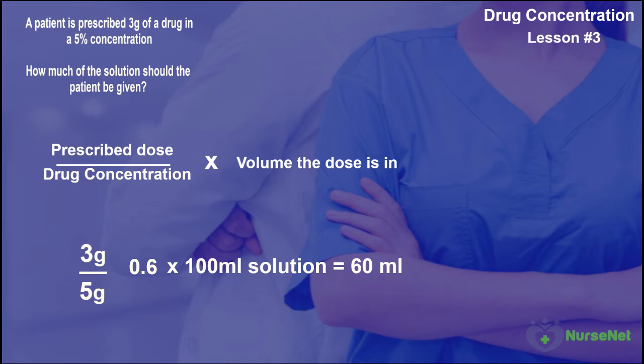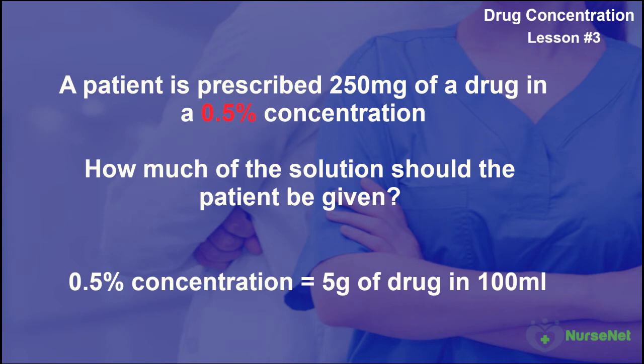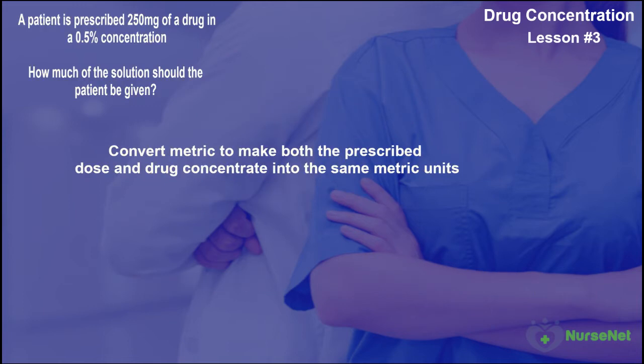Let's do one more, but this time we'll consider how different metric units might affect our calculations. A patient is prescribed 250 milligrams of a drug in a 0.5% concentration. How much of the solution should the patient be given? We understand that 0.5% drug concentration is equivalent to 0.5 grams in 100 milliliters of solution. Thinking back to the lesson on converting metrics, we need to get the prescribed dose and the concentrate dose into the same metric units — let's make them both milligrams.